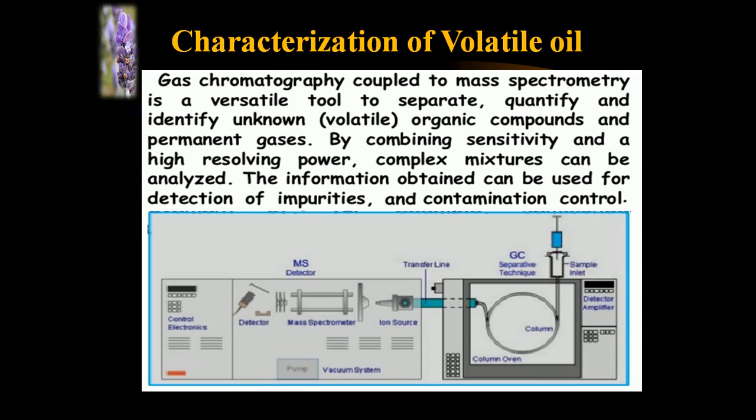The characterization of volatile oils mainly involves gas chromatography coupled with mass spectrometry. It is a highly versatile tool to separate, quantify, and identify volatile organic compounds and permanent gases. By combining sensitivity and high resolving power, complex mixtures can be analyzed. The information obtained can be used for detection of impurities and contamination control. Here, we can see the GCMS process where the GC is linked with mass spectrometry, and here we can see the signals.